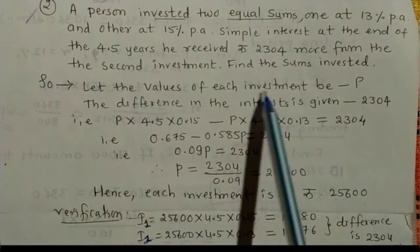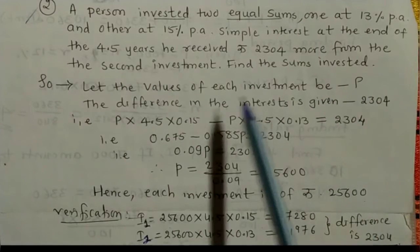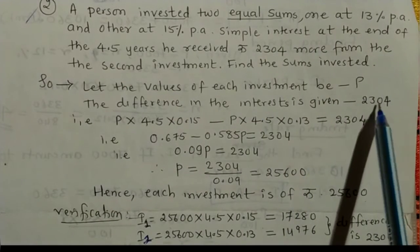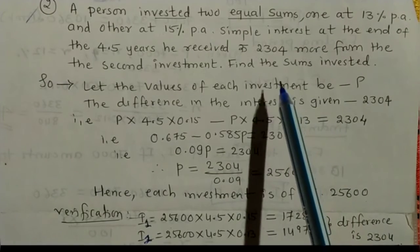Let the values of each investment be equal to P. The difference is given in the problem, that is 2304. Two SIs are given.